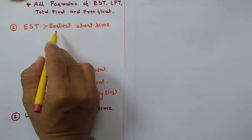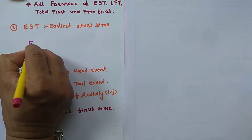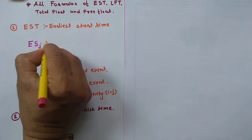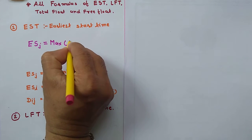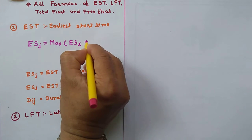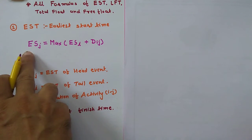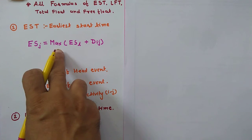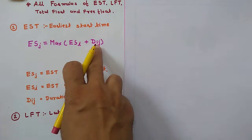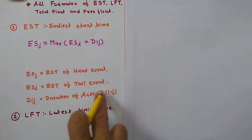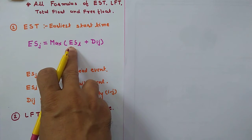First is EST — Earliest Start Time. The equation for EST is: ESJ is equal to the maximum of ESI plus DIJ. ESJ means the earliest start time of the head event, ESI means the earliest start time of the tail event, and DIJ means the duration of activity I-J.